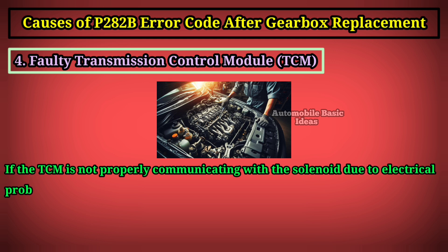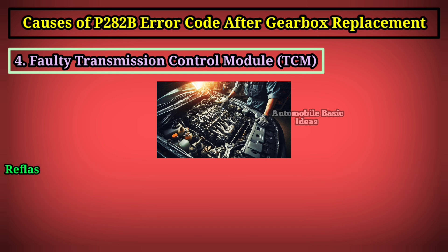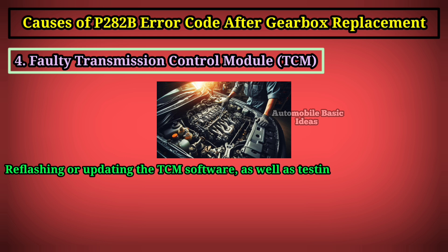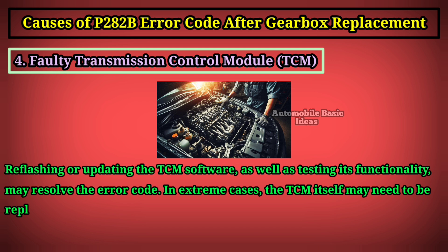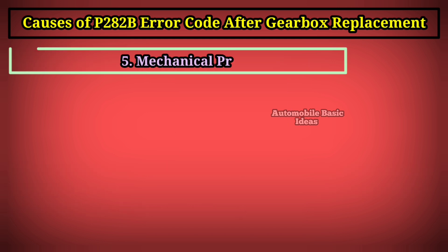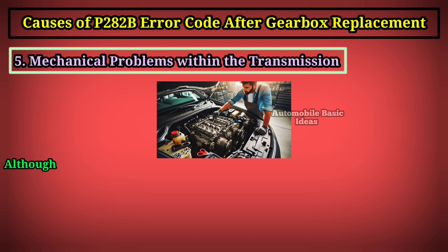If the TCM is not properly communicating with the solenoid due to electrical problems, software bugs, or hardware failure, the solenoid won't function as intended, causing shifting problems. Reflashing or updating the TCM software, as well as testing its functionality, may resolve the error code. In extreme cases, the TCM itself may need to be replaced if it's found to be malfunctioning.